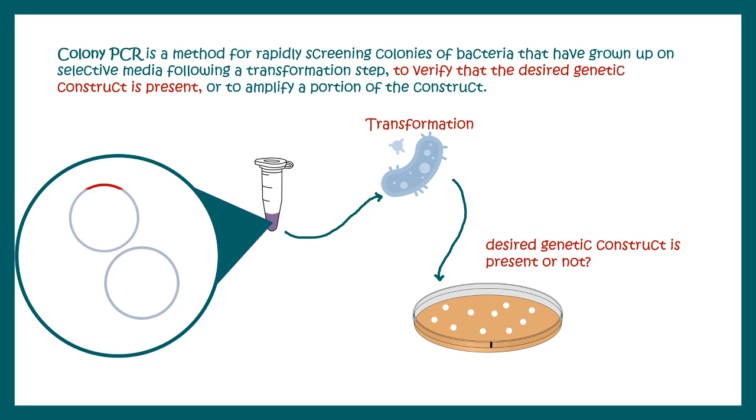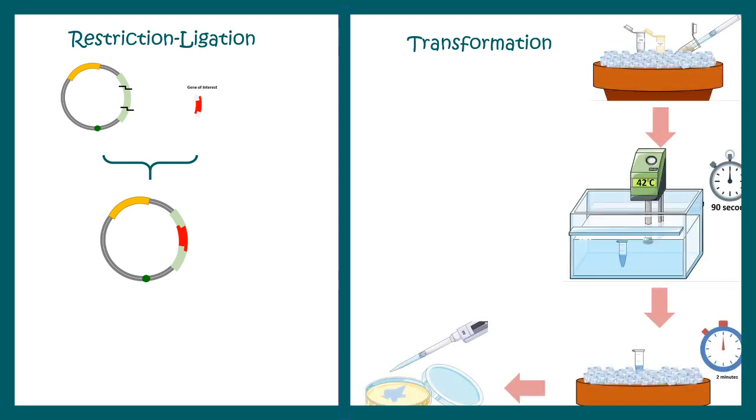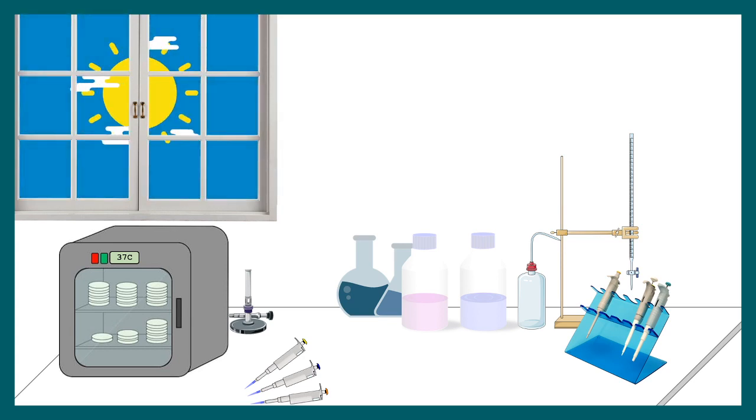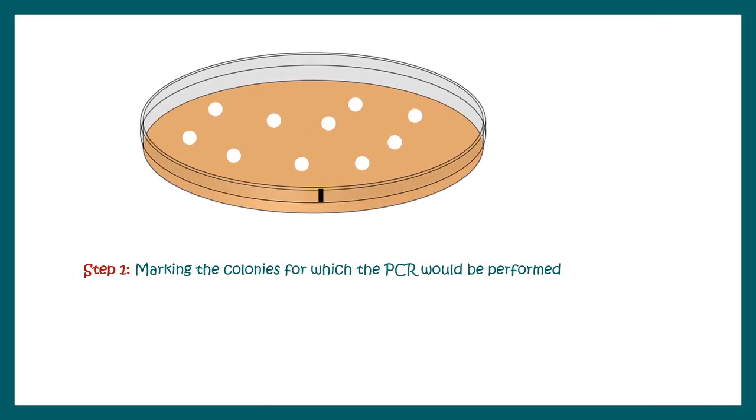Here is the workflow. First, you have to do the restriction and ligation. Then, taking this particular cloned plasmid, you are going to transform it inside a competent bacteria, and then you have to wait overnight. In the next day, you would generally see colonies on the plate.